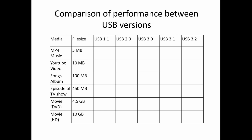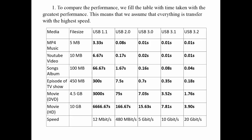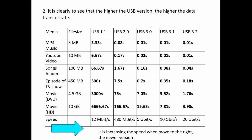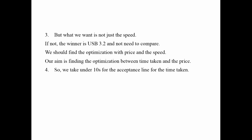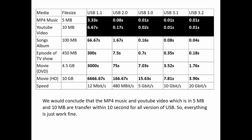We compare the performance between USB versions by filling a table with time taken at the greatest performance, ensuring that everything is transferred at the highest speed. It is clear that the higher the USB version, the higher the data transfer rate. But what we want is not just speed alone — otherwise the winner would simply be USB 3.2 and there would be no need to compare further. We aim to find the optimization between time taken and price, taking under 10 seconds as the acceptance line. We conclude that MP4 music and YouTube videos, which are around 5MB and 10MB, are transferred within 10 seconds for all versions of USB, so everything works fine.